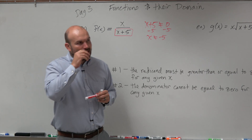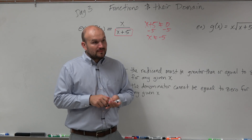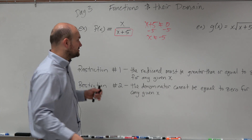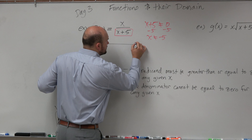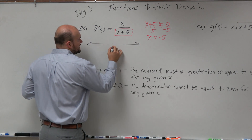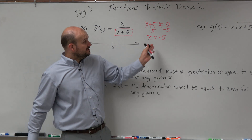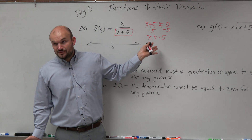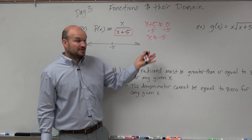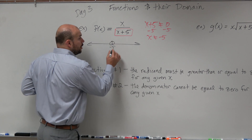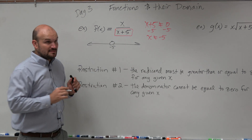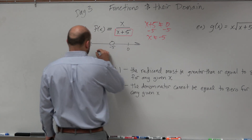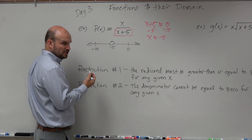Now let's think about writing this in set notation. Let's write this on a number line to see what it looks like. So here's negative 5 on the number line. Is negative 5 included or excluded? Excluded. So we use an open circle. But what about every other number — like 0, negative 10? Those are all good.